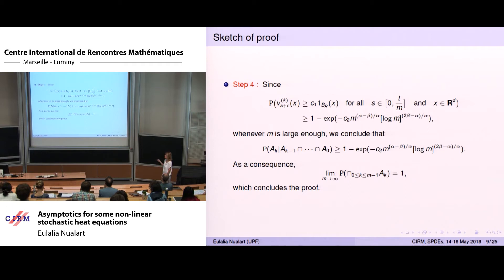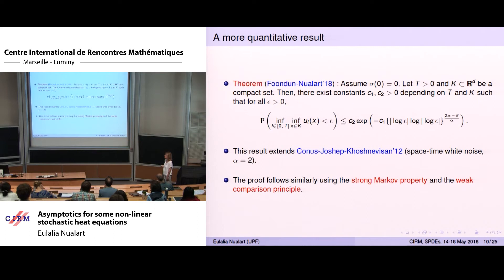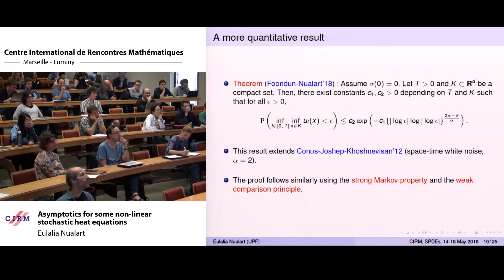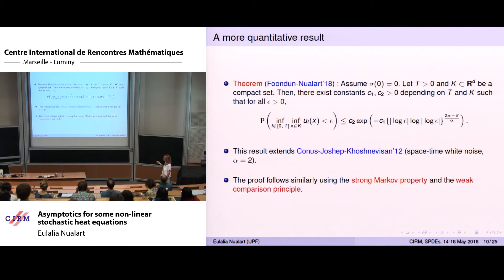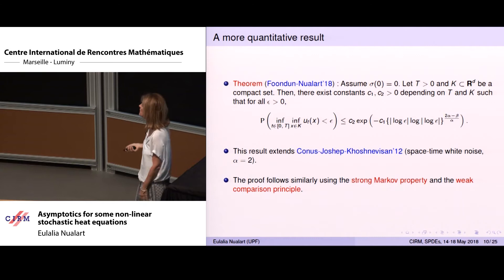This is our first contribution. A more quantitative result also follows, which is a direct extension of earlier papers — for example, Connus, Joseph, and Khoshnevisan for space-time white noise with alpha equal to two. This quantitative result says: fix T and a compact set K, then there is a constant depending on T and K such that the probability that U is very small is upper bounded accordingly. This uses the strong Markov property and the weak comparison principle.